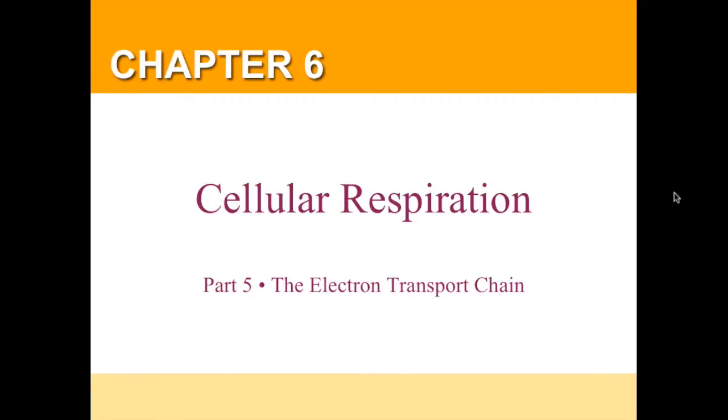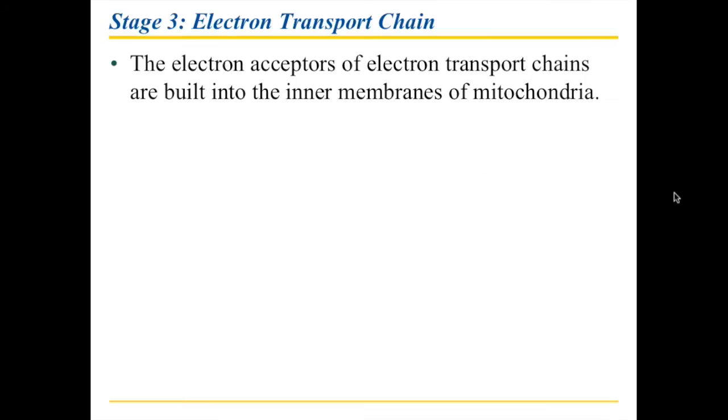Part 5 is the really cool stuff about cellular respiration. This is the kind of thing that allows us to be large organisms. The electron transport chain is the critical component when it comes to our energy use. Without it, as we'll see later, we're not going to be able to function as a big organism.